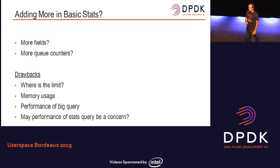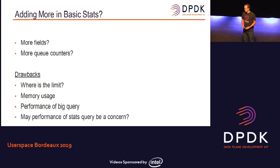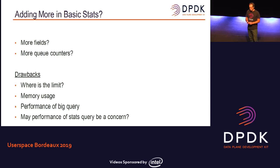So the question is: we don't have enough statistics in this structure. Should we add more? Should we add more queues in this array? Where do we stop? Which statistics do we want to have in this structure? What will be the size of this structure if we increase it? What is the performance drawback? By the way, is performance a concern? That's another question — the performance of getting statistics. Maybe you need it very fast.